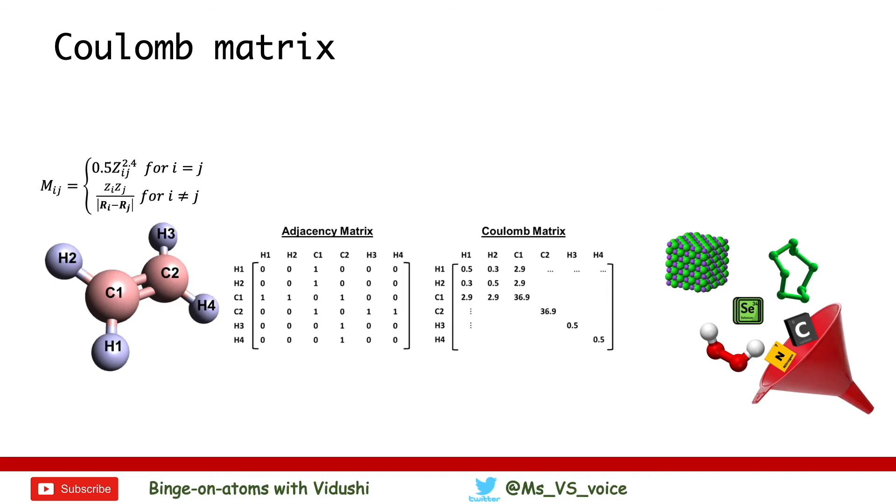Elements of the matrix are given by MIJ where Z is the atomic number and RI-RJ is Euclidean distance between atom I and J.